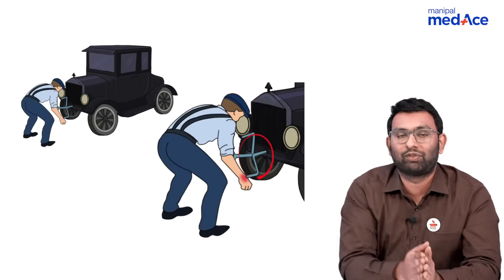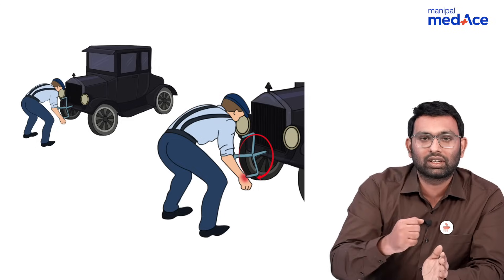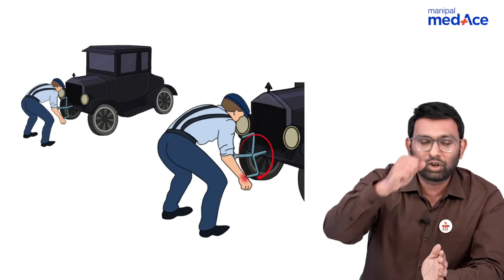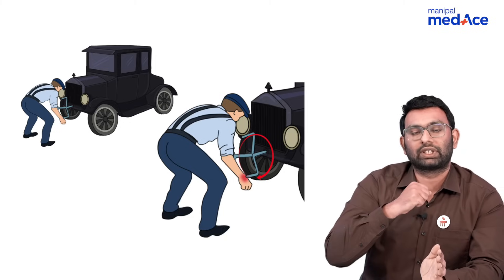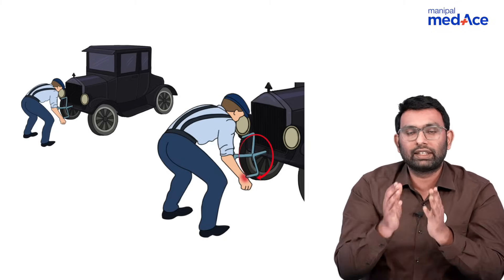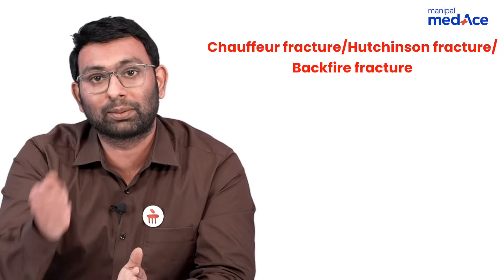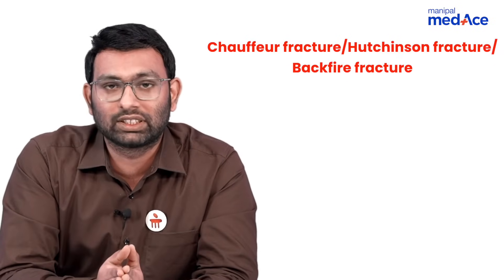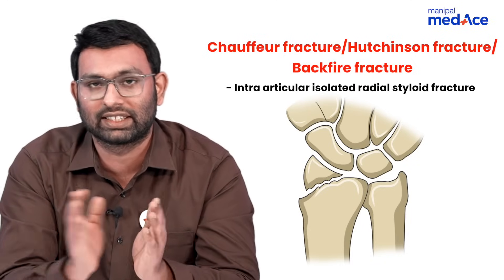The fourth story is of a chauffeur or a driver back in the 1950s. Back then, cars had to be started with a crankshaft — the driver would go outside and rotate the crank handle, and as the car started, the handle would rotate in the opposite direction, sometimes hitting the wrist. These patients came in with an x-ray looking like this. This is a chauffeur's fracture, also called a backfire fracture or Hutchinson's fracture, where there is an intraarticular fracture of the isolated radial styloid.